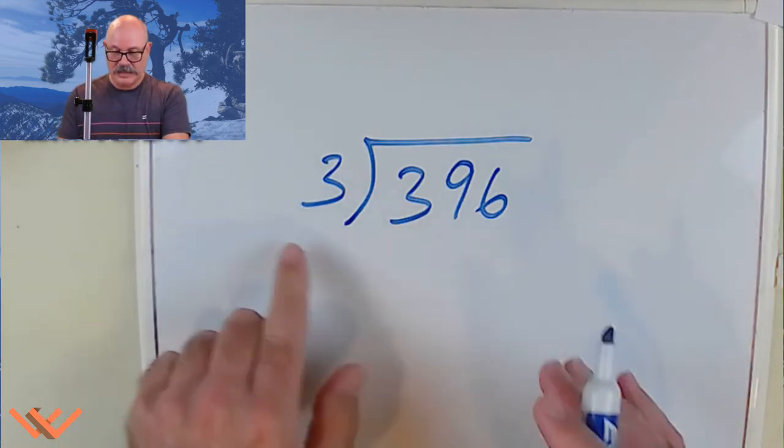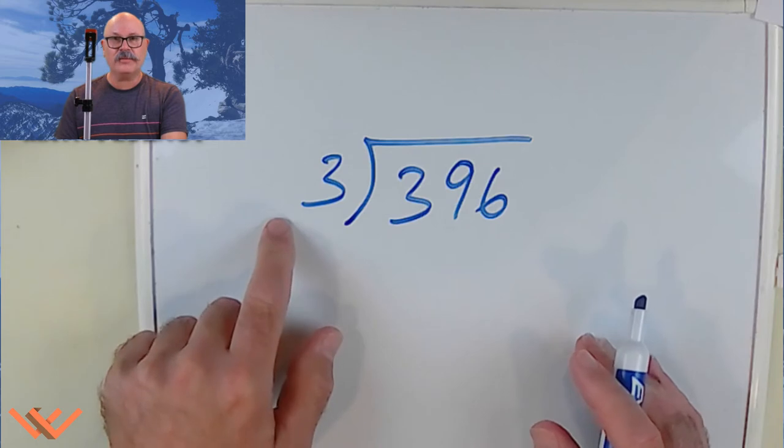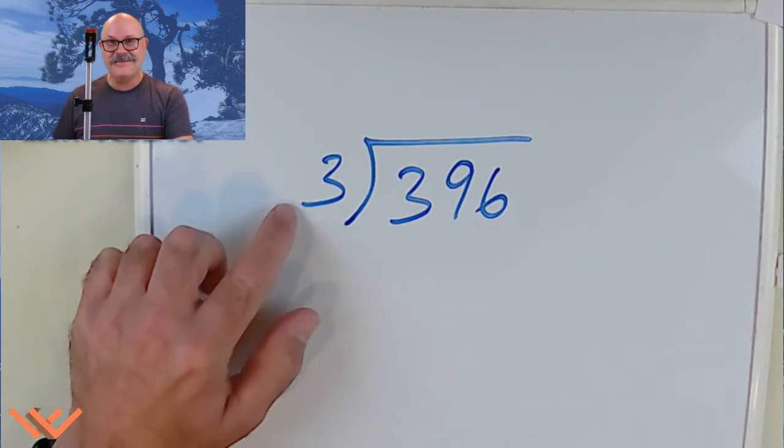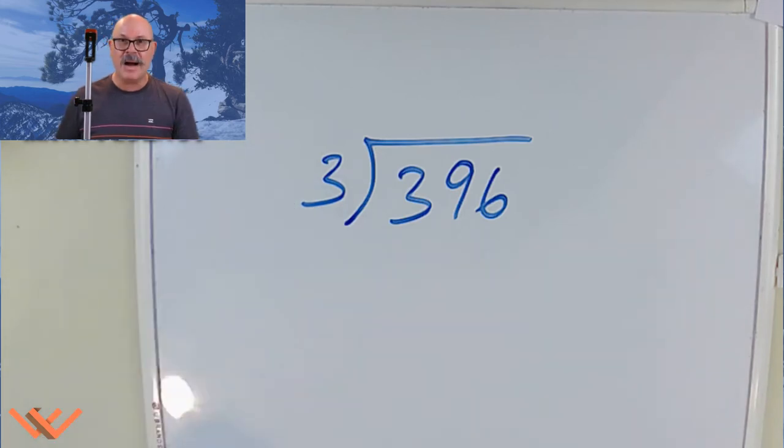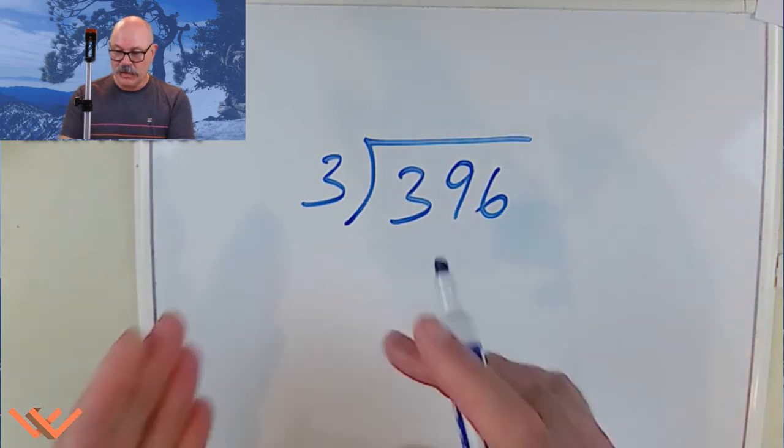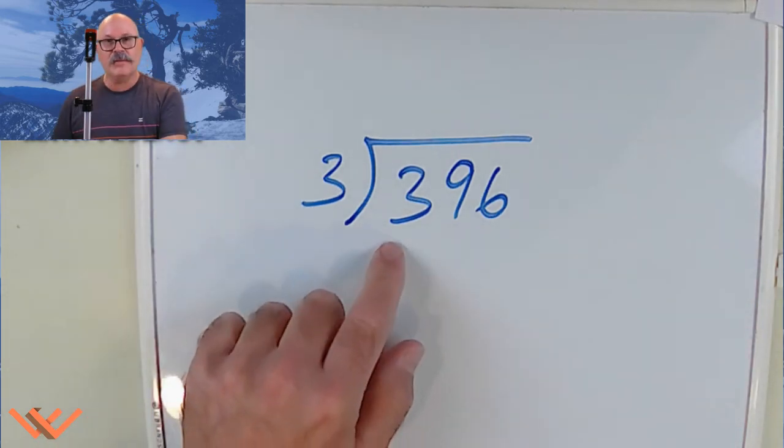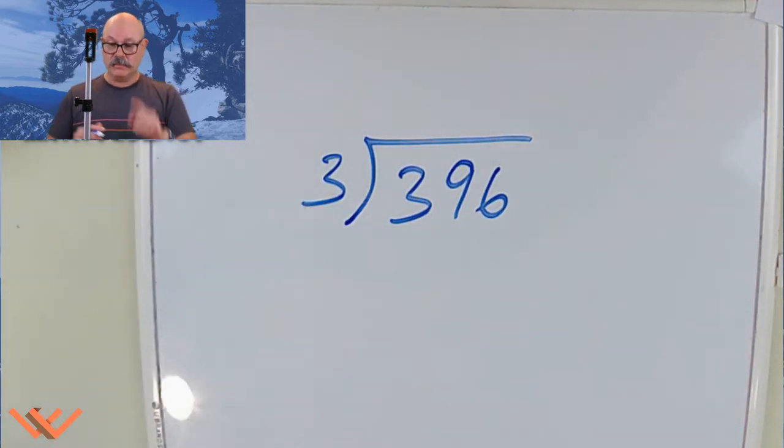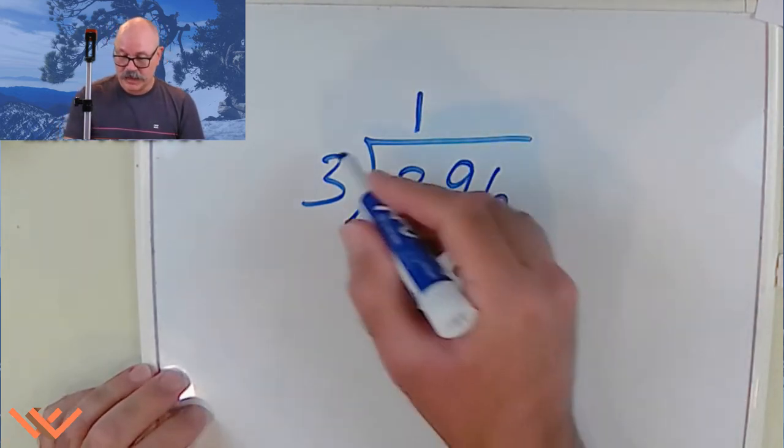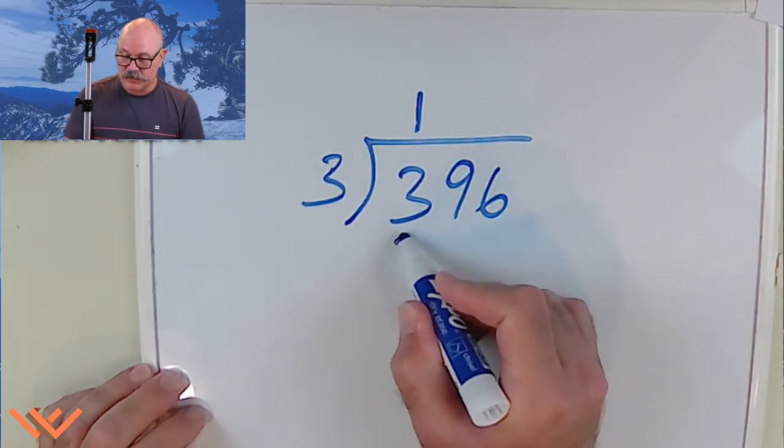Divide. Well, we're dividing 396 divided by three. Monkeys. We're going to multiply the divisor by a number because we're trying to subtract it from here to find the answer. So how many threes go into three? Well, just one. So I put the one up here at the top as part of the quotient.